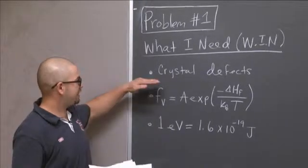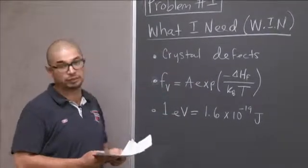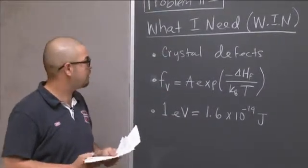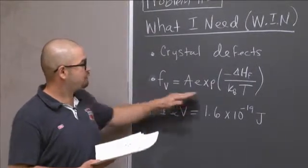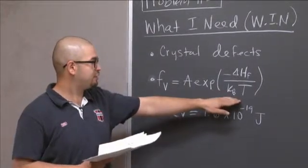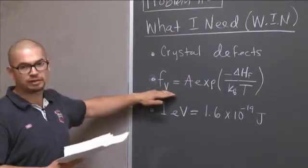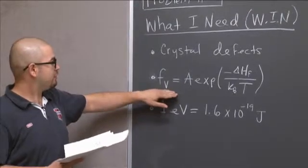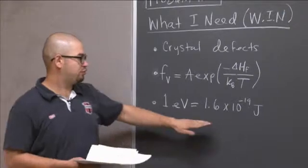First thing is understanding the properties of crystal defects. And for this problem, particularly Frankel defects. The formula, which is an Arrhenius relationship as a function of temperature and energy or enthalpy, of the fraction of vacancies that are formed in a crystal. And the conversion between one electron volt and the joule. This will help you solve the problem.